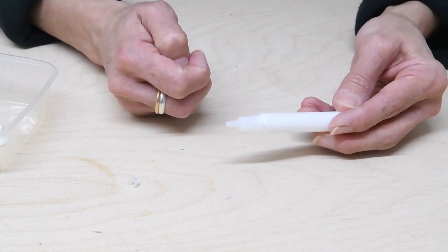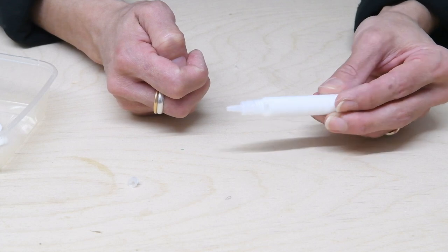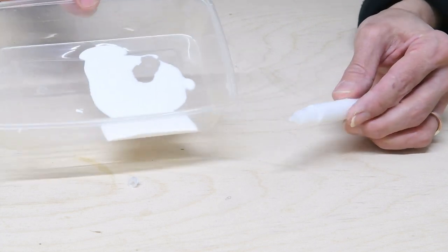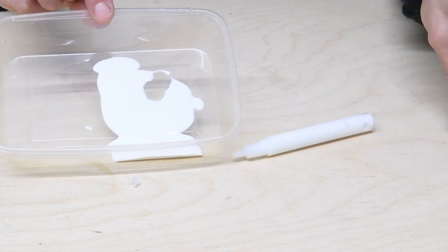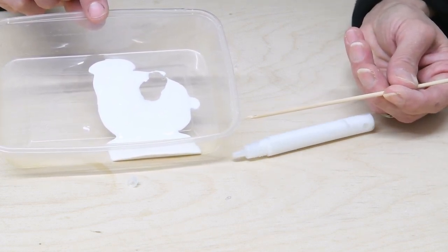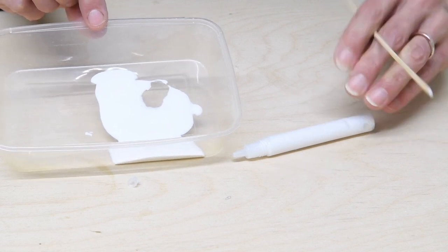Some people find it easier to use the glue pen like this and just squeeze it directly through the nozzle. Personally, I like to put it all in a tray and then use a bamboo skewer to dip into the glue. I find that's easier to control, but it's up to you.